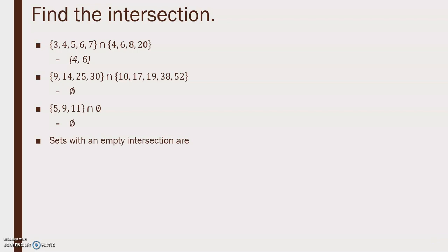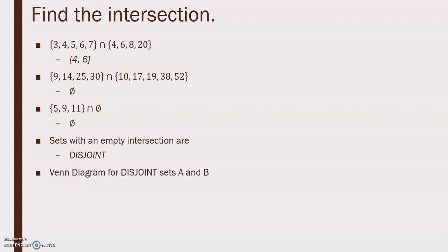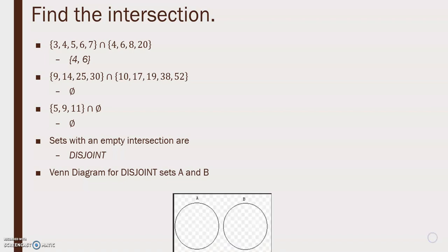Sets with an empty intersection are disjoint. In the Venn diagram for disjoint sets A and B, they have an empty intersection — sets A and B do not intersect at all.